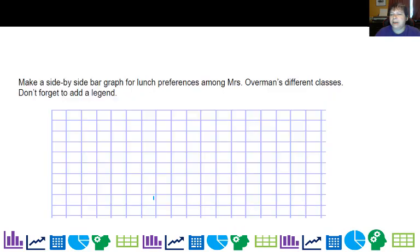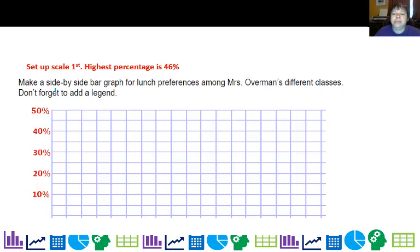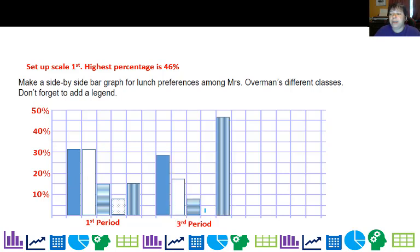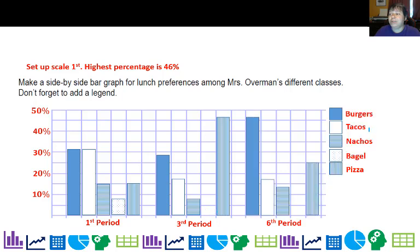Now that we have our relative frequency table, we're going to make a side-by-side bar graph. Set up your scale — the highest percentage was about 46%, so going to 50% is fine. I like to use nice round numbers, multiples of five and ten, so I'll go 10, 20, 30, 40, 50. Then I'll do first period — there's your distribution, which looks like the relative frequency we looked at earlier. Then I add in third period and sixth period. Always add a legend, and don't forget your title: 'Preferred Lunch.' So this is a side-by-side bar graph — a bar graph for each period placed side by side.